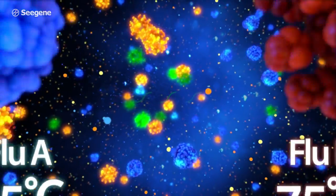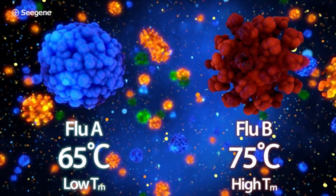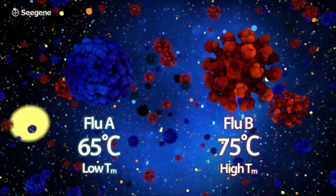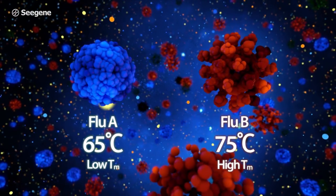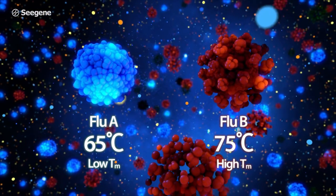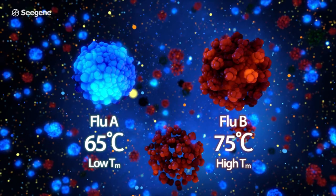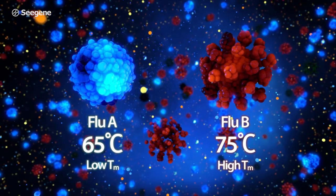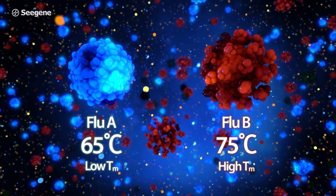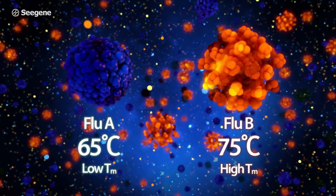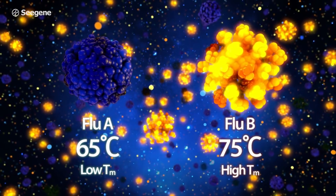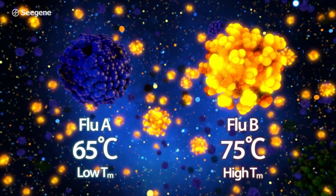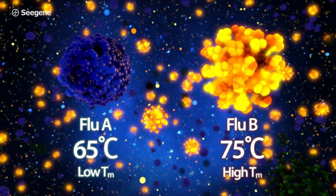To show how MUDT works, we designed two targets using our TOS technology. The FLU-A target is designed to emit a robust signal at less than the relatively low temperature of 65 degrees Celsius. The FLU-B target is designed to emit a robust signal at less than 75 degrees Celsius.